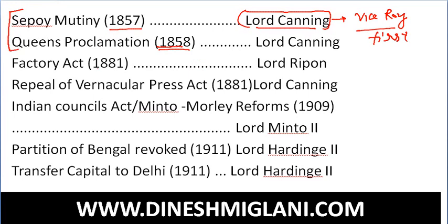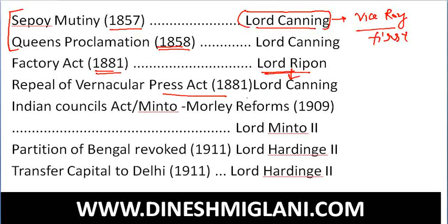The Factories Act of 1881 and the Repeal of the Vernacular Act were both major events at the time of Lord Ripon.